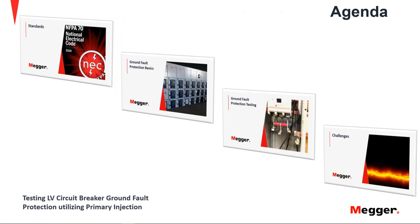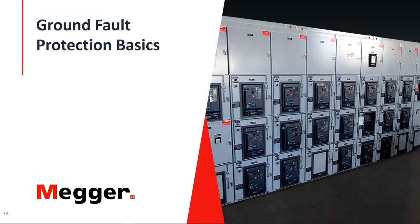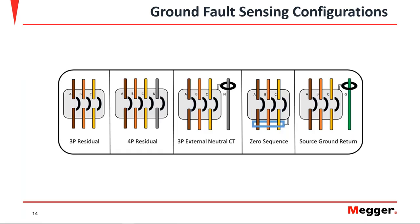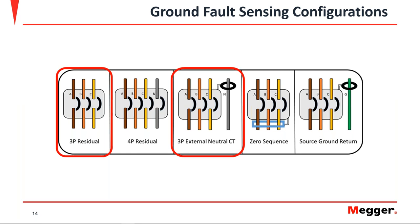Now let's go to the basics of Ground Fault Protection. Our objective today is not to discuss the ground fault protection scheme itself, but to make sure we're on the same page before going into testing. There are several different methods to detect this type of fault with our circuit breaker. We have the residual sense configuration — either 3-pole or 4-pole — the option to have an external neutral CT, the zero sequence, and the source ground return.